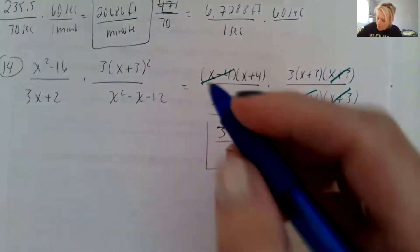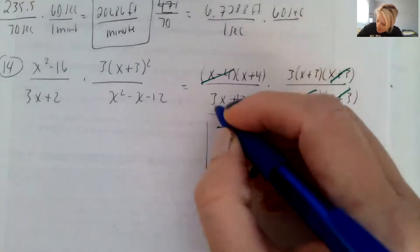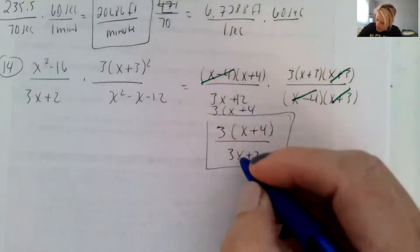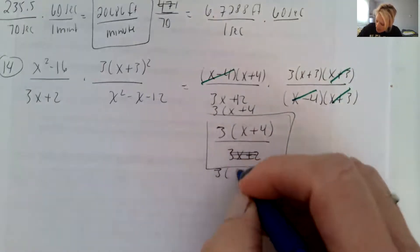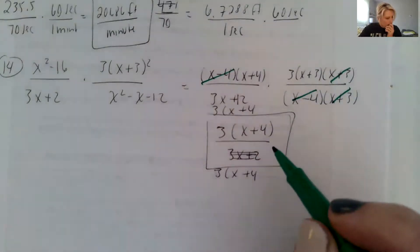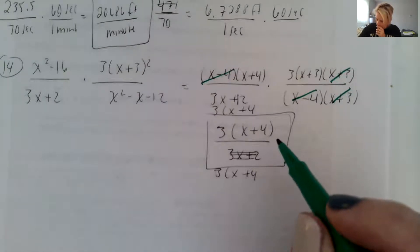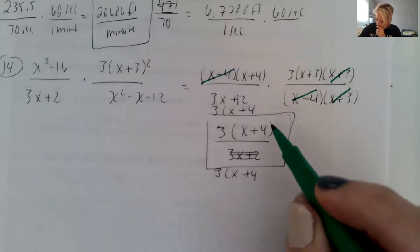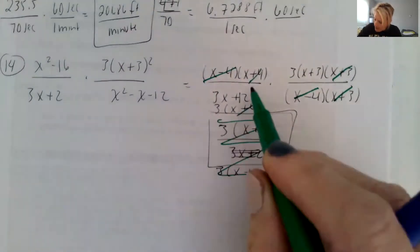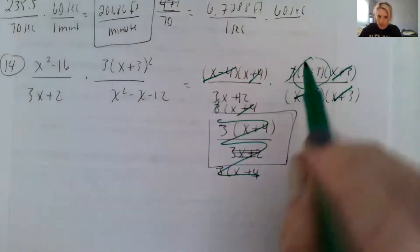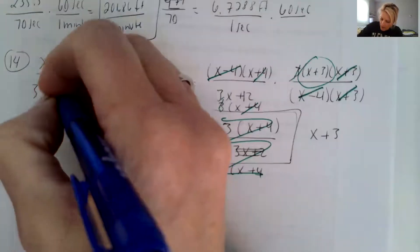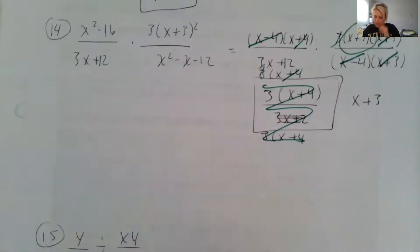The bottom left was three x plus 12, so this should have been three times x plus four. So this should be three times x plus four. So these should cancel. The threes will cancel and we're left with x plus three. I was looking at it incorrectly. This is three x plus 12.